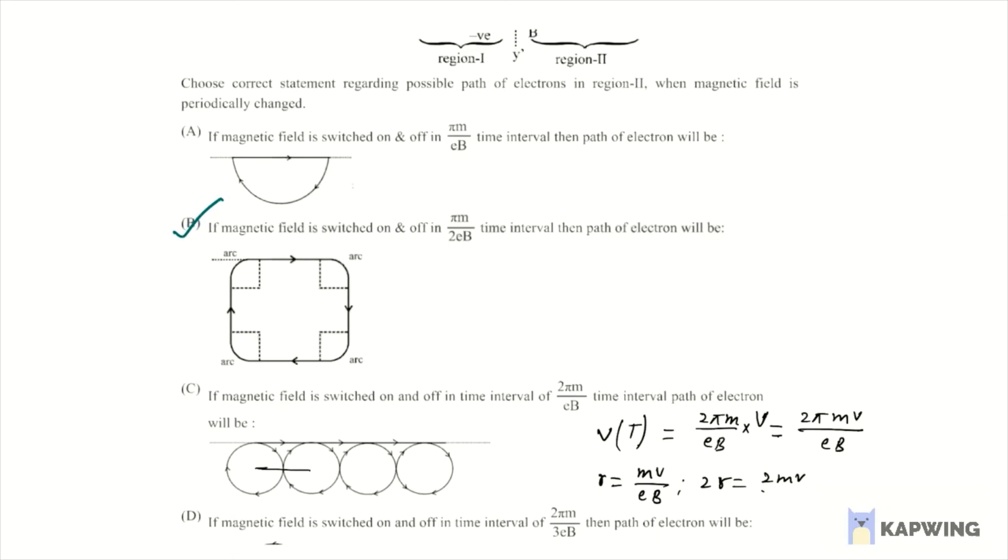And if this separation is 2R, then we can say 2R is basically equal to 2mv divided by qB. And we can directly see from here that this 2R is less than the displacement traveled with the constant velocity, so these circles must not be touching to each other. That's why C option is incorrect.